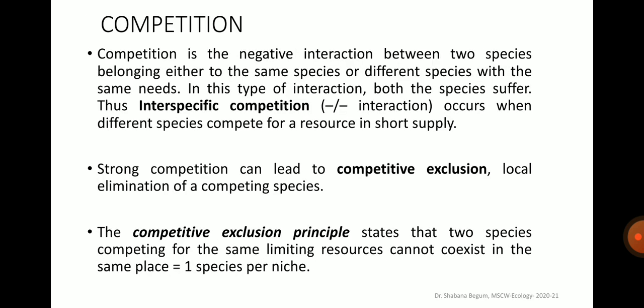The next interaction is competition. Competition is the negative interaction between two species belonging either to the same or different species with the same needs. In this type of interaction, both species suffer. Interspecific competition occurs when different species compete for a resource in short supply. Strong competition can lead to competitive exclusion, where the local elimination of a competing species occurs. The competitive exclusion principle states that two species competing for the same limiting resources cannot coexist in the same place, because in the long run one species displaces the other — per niche only one species can survive.